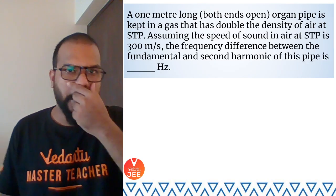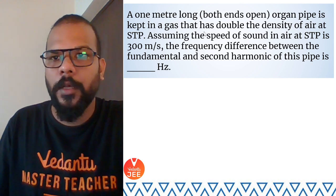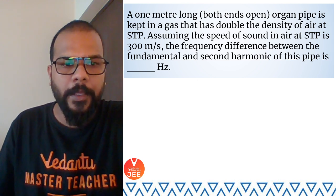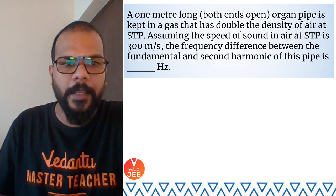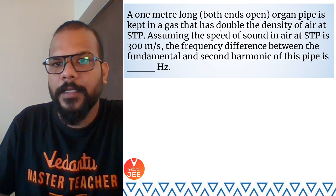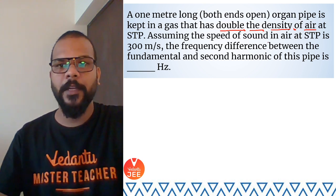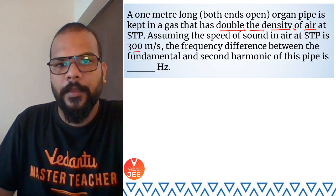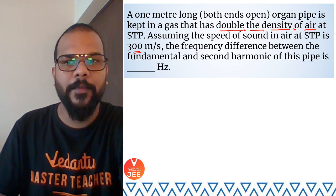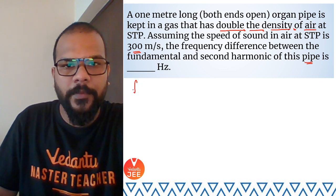In this question, we have a one-meter long organ pipe which is open at both ends — that means it's an open organ pipe. Inside this pipe there is a gas with density double the density of air. The speed of sound in air is given as 300 meters per second. We need to find the frequency difference between the fundamental and second harmonic of the pipe.